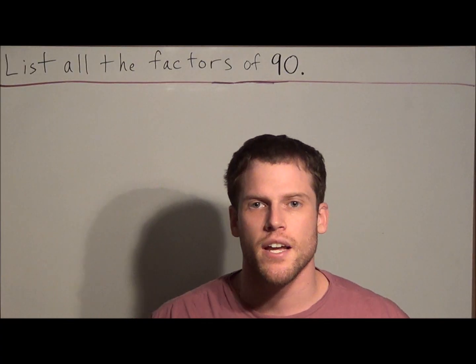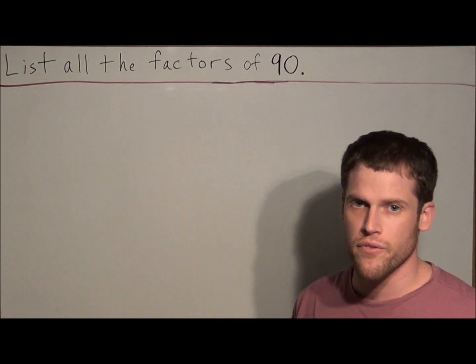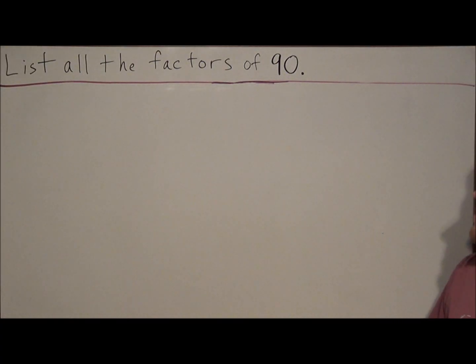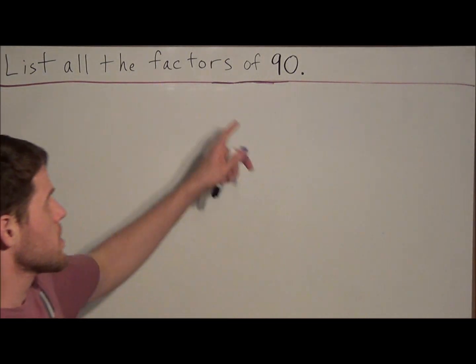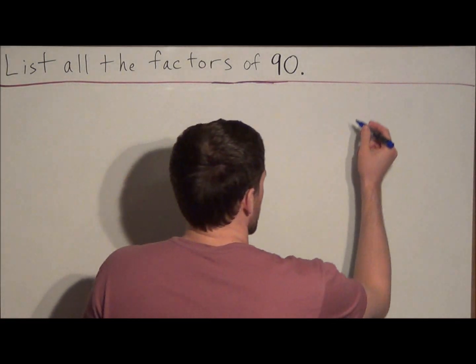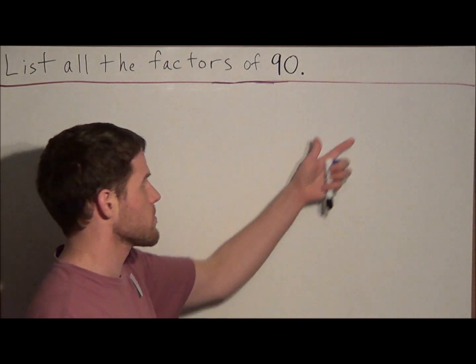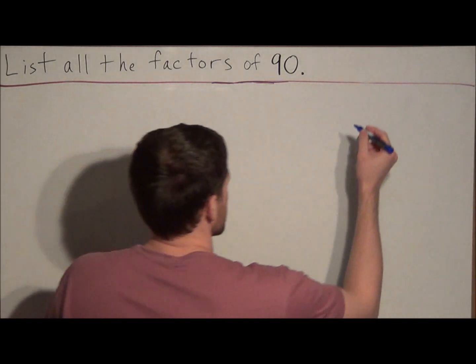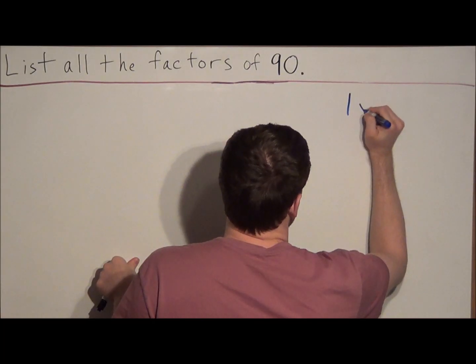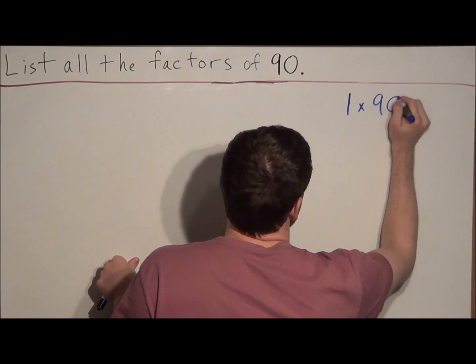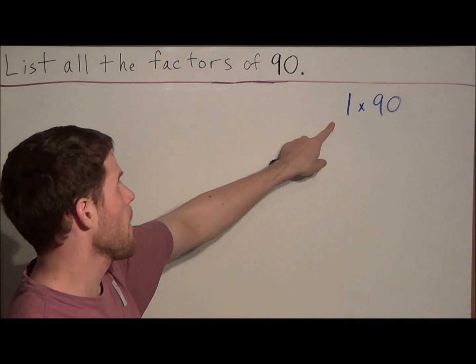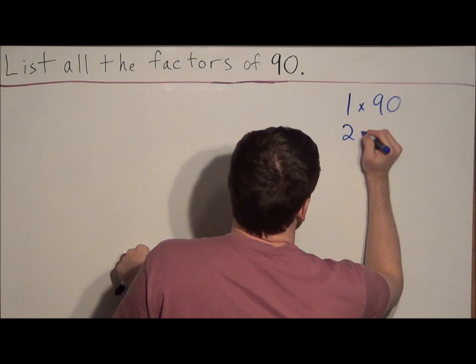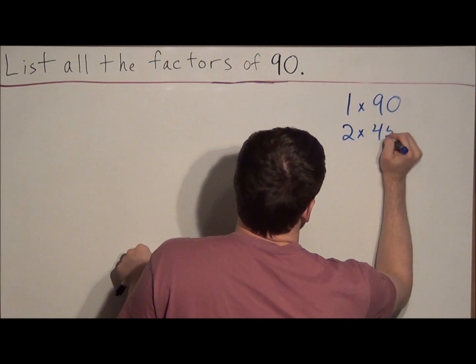Hi, my name is Mr. D, and today I want to take a look at a cool trick for factoring. So we have list all the factors of 90, and now the way this problem is going to work, typically when we do these problems, I'm sure we're all used to listing pairs of numbers that multiply to 90. So if we start off with the easy ones, we could say 1 times 90 equals 90, then we go to the next number after 1, which is 2, and since 90 is even, we could say 2 times 45 equals 90.